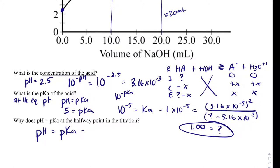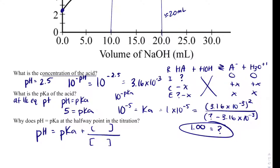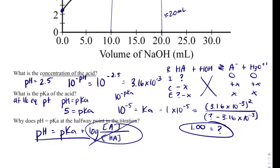Why does pH equal pKa at the halfway point? The Henderson-Hasselbalch equation says pH = pKa + log([A⁻]/[HA]). At the halfway point, [A⁻] and [HA] are the same — whether it's 5 M and 5 M, or 1 M and 1 M. Because A⁻ and HA are equal, the log term equals log(1) = 0, and that term cancels out. That's why pH equals pKa at the half equivalence point.